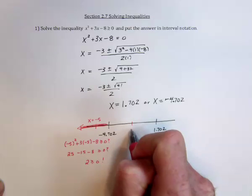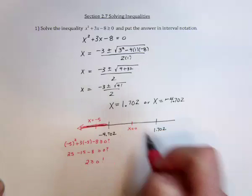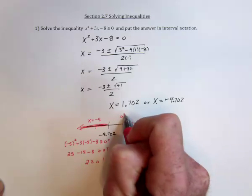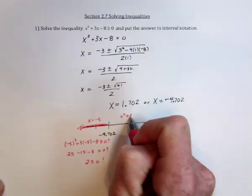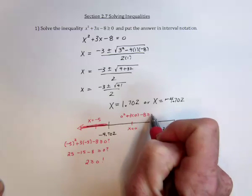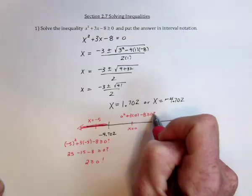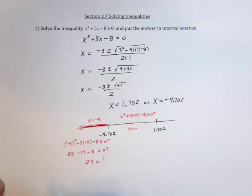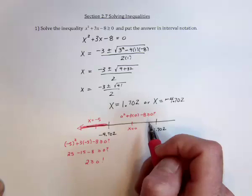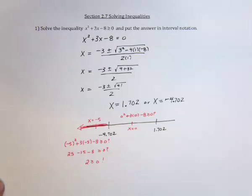And now, if we test something in the middle, like x equals 0, we would have 0 squared plus 3 times 0 minus 8. Is that bigger than or equal to 0? Well, what's left behind is just a negative 8. Is that bigger than or equal to 0? No. So we don't use the middle part.